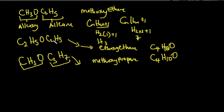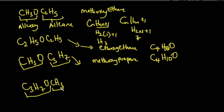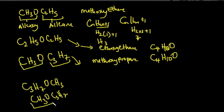They are confirmed as isomers, obtained through metamerism by altering the alkyl groups on each side of the oxygen. Note: you cannot say 'propoxy methane' because the longer chain is propane, not methane. Rearranging gives CH₃-O-C₃H₇, correctly named methoxy propane.